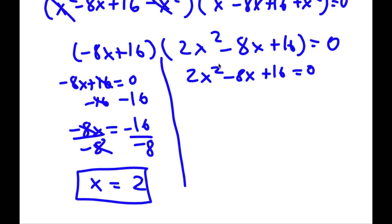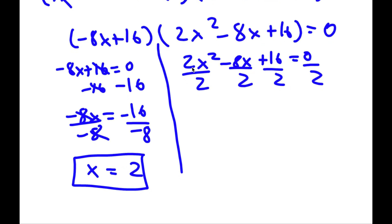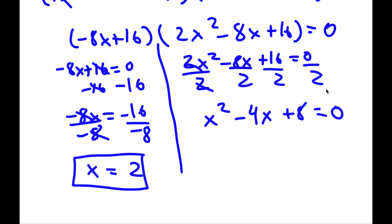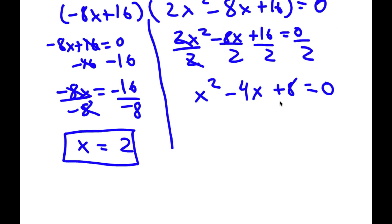Now to find the two other solutions from the quadratic equation 2x² minus 8x plus 16 equals zero, I'll first divide both sides by 2 since all terms share a factor of 2. So 2x² divided by 2 is x², negative 8x divided by 2 is negative 4x, and positive 16 divided by 2 is positive 8. So now I have x² minus 4x plus 8 equals zero.